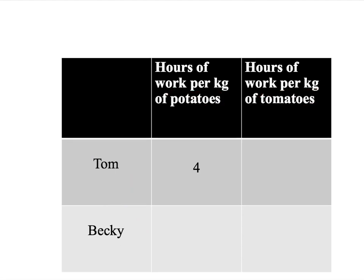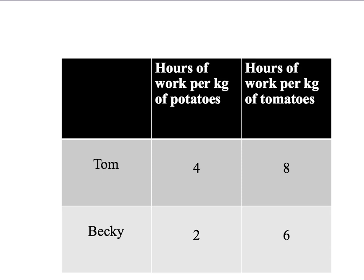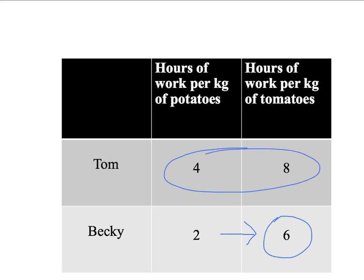Suppose that they have different abilities. It takes Tom four hours to grow one kilogram of potatoes, and eight hours — twice as long — to grow a kilogram of tomatoes. Becky is faster than Tom: it only takes her two hours to grow a kilogram of potatoes and six hours to produce a kilogram of tomatoes. Notice that Becky can grow both crops faster than Tom. However, it takes her three times as long to produce tomatoes as potatoes, whereas it only took Tom twice as long.